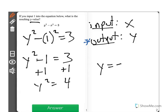So y is equal to the square root of 4. Which means that y can either be positive 2 or negative 2. Because both of those numbers, when you multiply them by themselves, will give you 4.